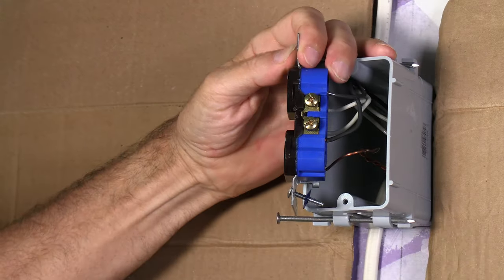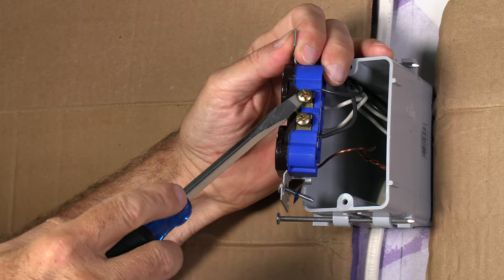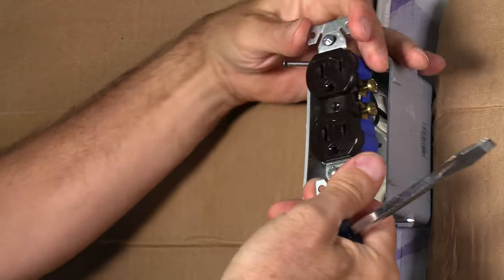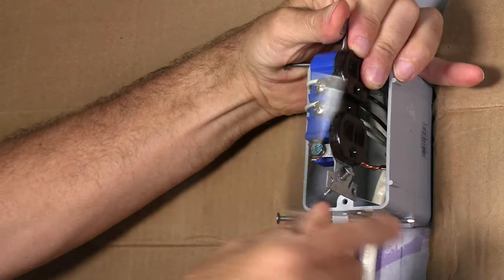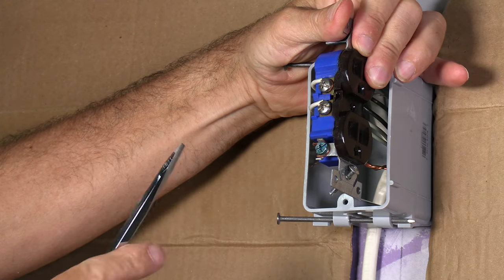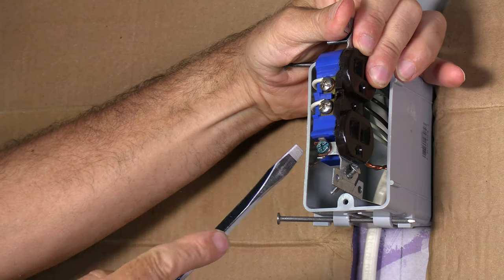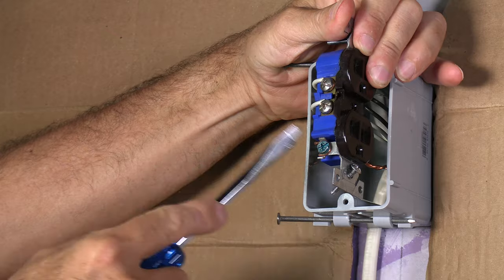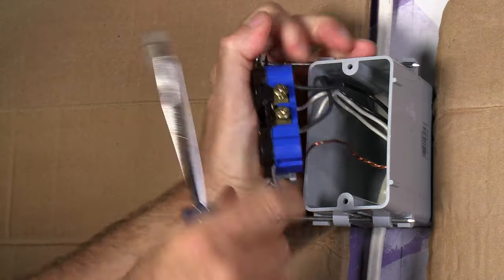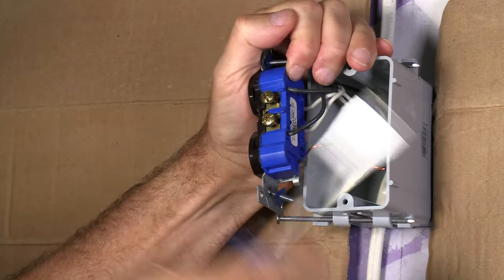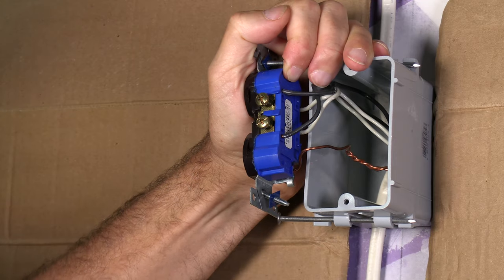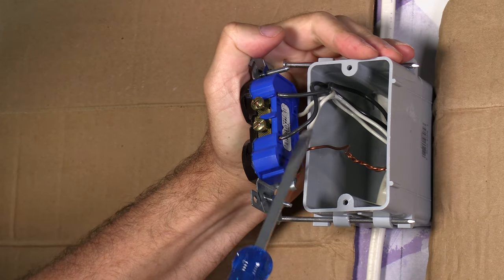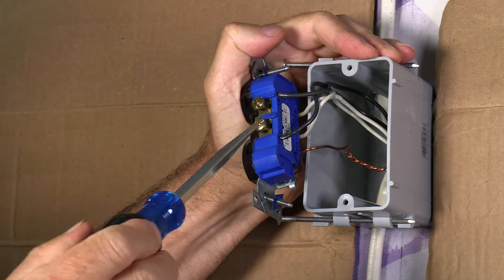So on the right side here, we have these brass screws that go to the hot side. And on the left hand side, we have the silver screws on the neutral side. And also we have a green screw on the ground. We use the black wire for hot over here on the brass screw side. So you have your black wires coming here and the white wire is going over there.